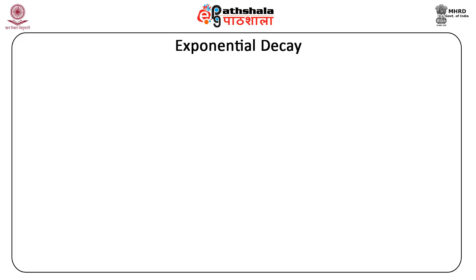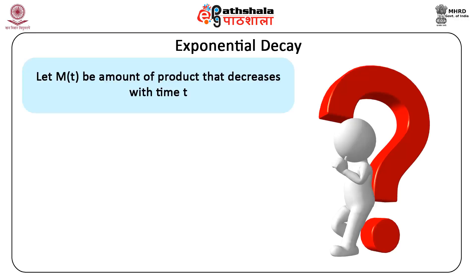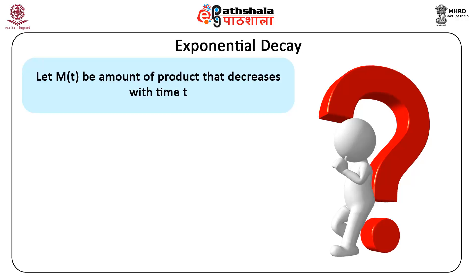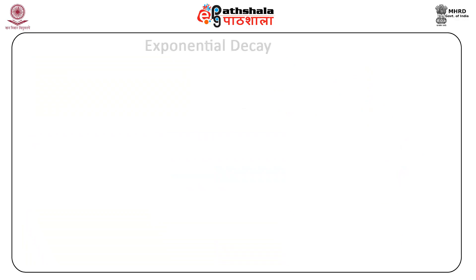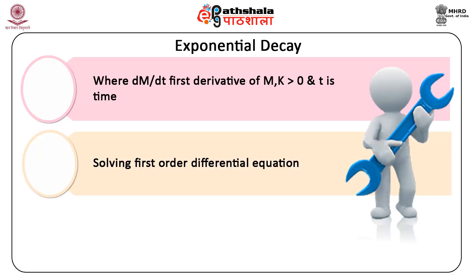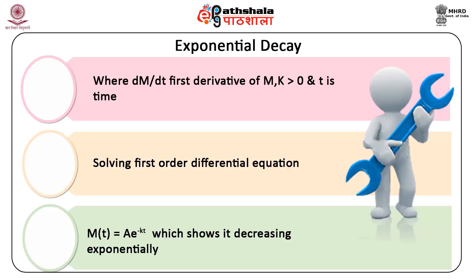Now we will discuss exponential decay. Let m(t) be the amount of a product that decreases with time t, and the rate of decrease is proportional to m: dm/dt = −km, where dm/dt is the first derivative of m, k > 0, and t is time. After solving the first-order differential equation, we obtain m(t) = A · e^(−kt), which shows it decreasing exponentially.